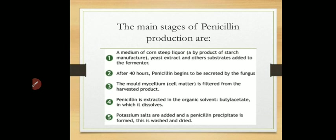First, media of corn steep liquor, yeast extract, and other substrates are added to the fermenter. Then after 40 hours, penicillin begins to be secreted by the fungus. In the first 40 hours, the lag phase of Penicillium chrysogenum proceeds very slowly — slow growth is observed and penicillin is not yet produced. Once it enters the exponential phase, after about 48 hours, actual penicillin secretion by the fungus begins.